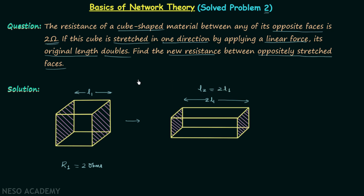Let's say the area of cross-section before stretching is A1 and after stretching it is A2. We need to calculate the resistance between the two stretched faces. We know resistance is equal to resistivity Rho multiplied by length divided by area.